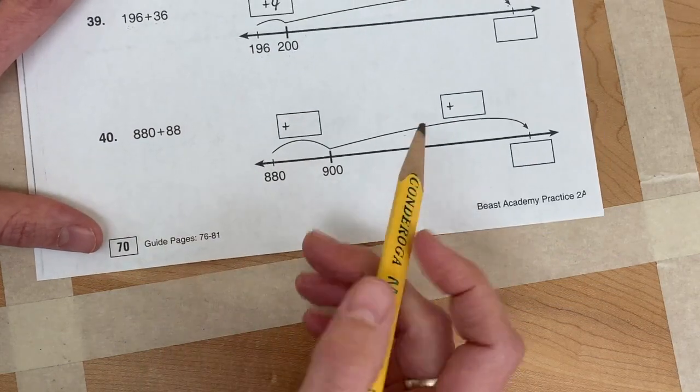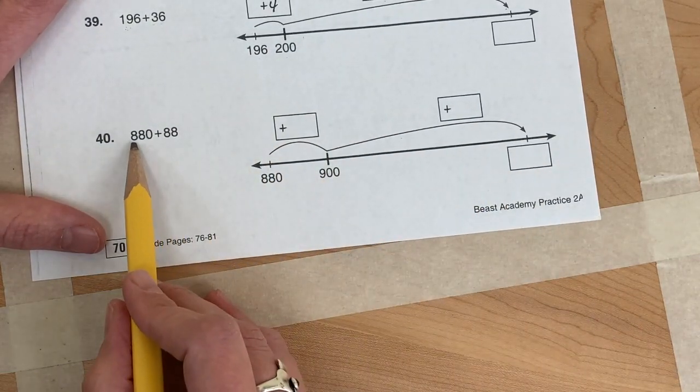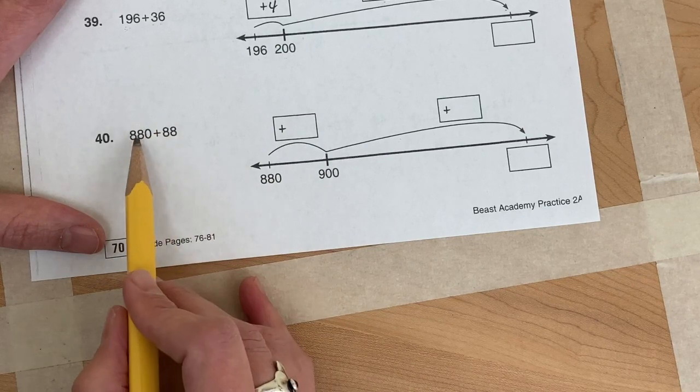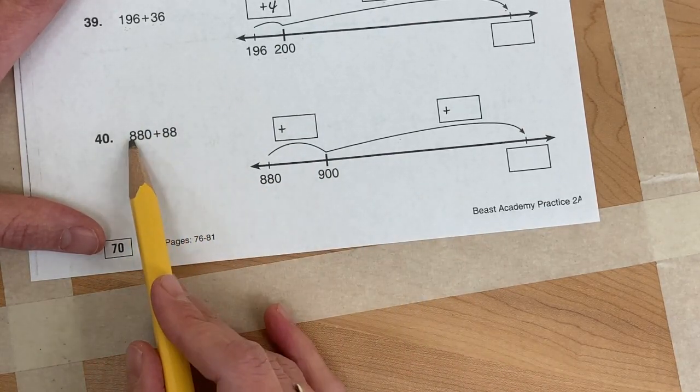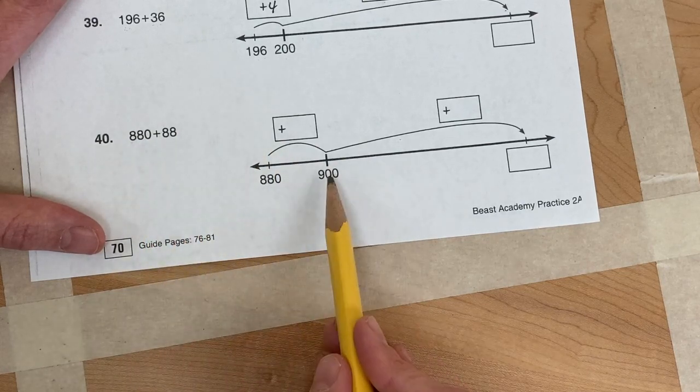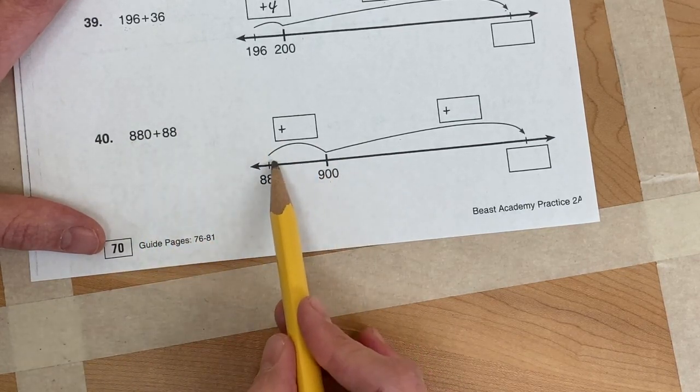So let's look at the next one that you'll have to do on your own. We have 880 plus 88. So 880 is really close to 900, right? So first we have to figure out...